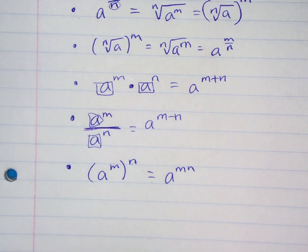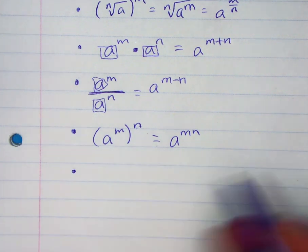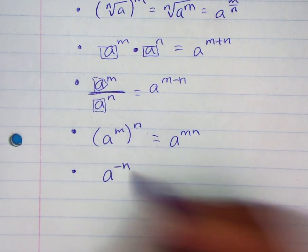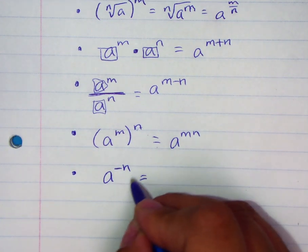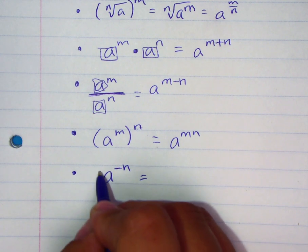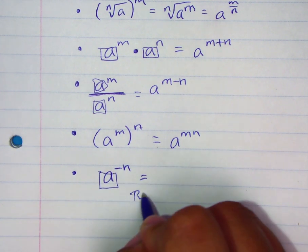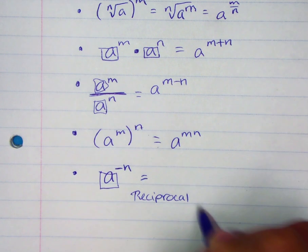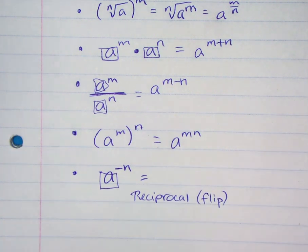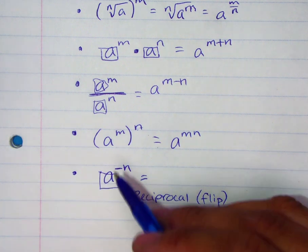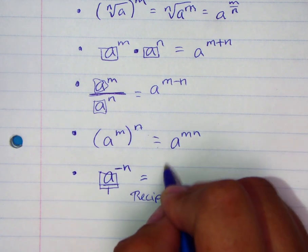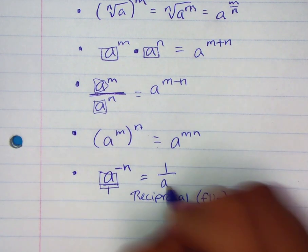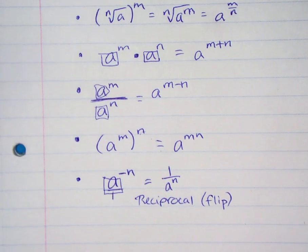There's an anchor chart in the classroom showing these rules — I just want you to understand what they're saying. Here's another rule: if you have a negative exponent and don't want to work with it, you need to rewrite it with a positive exponent. To do that, look at your base and take the reciprocal — or in easier vocabulary, flip it. When you have a fraction it flips easily, but when you have a whole number, remember there's a 1 as the denominator. When you flip it, the base now has a positive exponent.